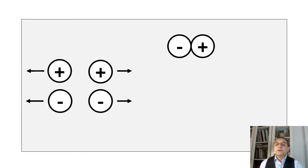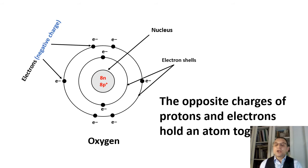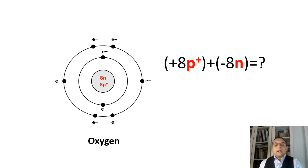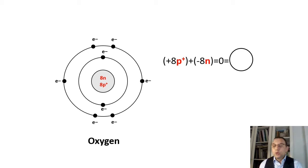Remember, unlike charges attract and like charges repel. The opposite charges of protons and electrons hold an atom together. We have here eight protons, and therefore there should be eight electrons. What you're looking at is the electron cloud made of eight electrons, because positive 8 plus negative 8 equals neutral. So the overall charge of an atom is neutral.